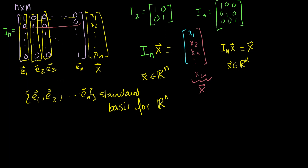Why is it called that? Well, the word 'basis' is there, so two things must be true: these vectors must span Rn, and they must be linearly independent. It's pretty obvious from inspection they're linearly independent. If this vector has a 1 in a given position and no one else has a 1 there, there's no way you can construct that 1 with some combination of the rest. You can make that same argument for each of the components.